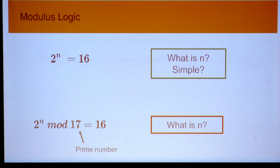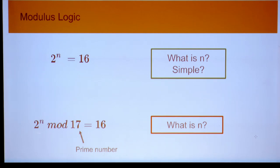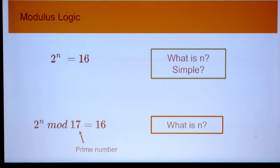There's one more important concept: the modulus operation. Modulus is used everywhere in cryptography. For example, if you say x to the power n equals 16, it's straightforward — n equals 4. But once you add the modulus, you can't easily tell what n is. With a simple modulus operation, x to the power n could equal 16 because the mod cycles around — so 16 becomes 17 becomes 33, and finding n becomes non-deterministic. That's why modulus is used in cryptographic contexts.